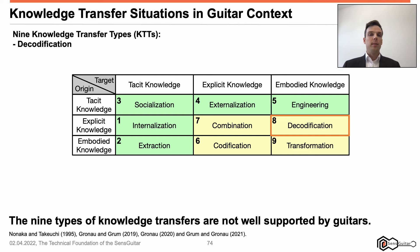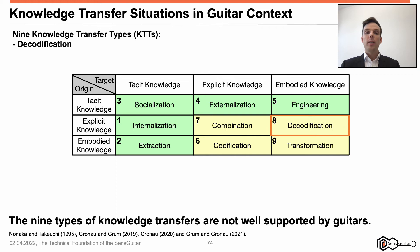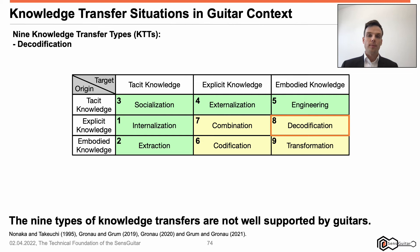Decodification: explicit knowledge (origin) is perceived by a knowledge carrier and transferred by engineering activities into an object embodying knowledge (target). For instance, if a person studies the composing of a musician (internalization) and comes up with a modification idea because of attractive notes of a scale (engineering), the note change constructed holds the decodified knowledge about the formation ruleset. Since traditional guitars do not support internalization and engineering, decodifications are not supported by guitars yet.